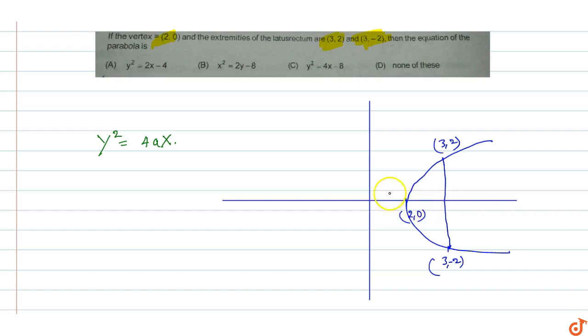The standard parabola has vertex at origin (0,0), but our vertex is (2,0). Shifting the vertex to (2,0), we calculate (y-0)² = 4a(x-2), which simplifies to y² = 4a(x-2). Now we need to find the value of 'a'.